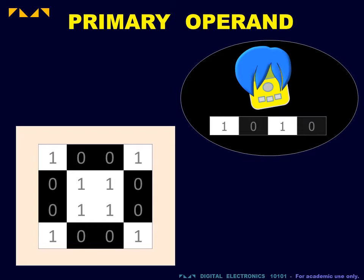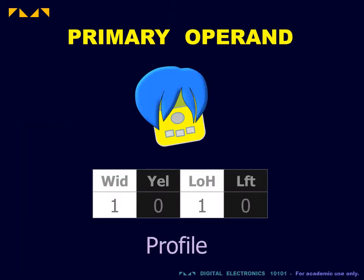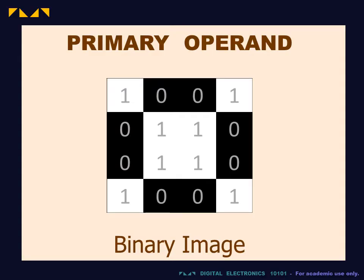In the language of arithmetic, the preprocessed data may be called the primary operand. For the database application, the primary operand is a 4-bit profile of each client. For the image processing application, the primary operand is a 4x4-bit binary image.